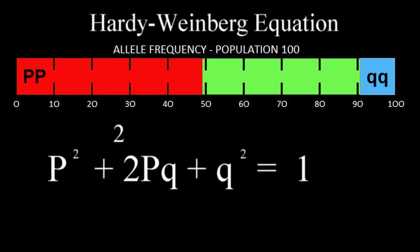From there, we simply multiply 2 times P times Q to get 0.42, or 42% of the population with both the P and the Q alleles. According to the Hardy-Weinberg law, these percentages remain constant in a population. This is also known as Hardy-Weinberg equilibrium.